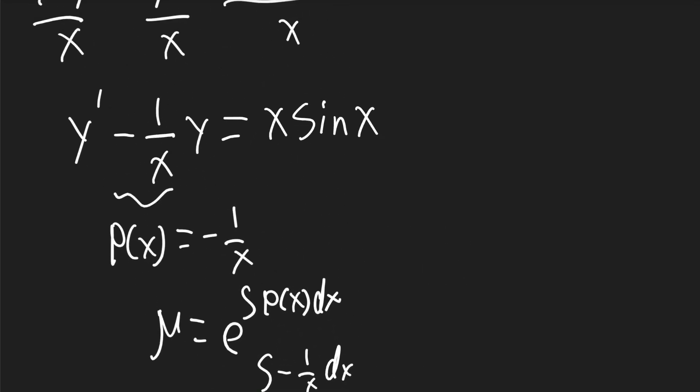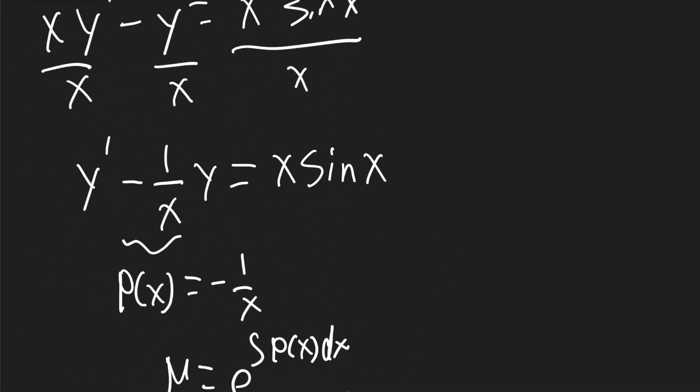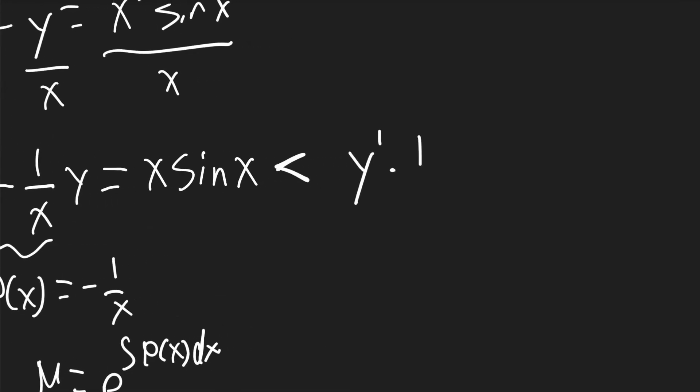Now we can multiply mu to all the terms in this equation here. It'll be y prime times 1 over x minus 1 over x squared times y will be equal to just sine of x.